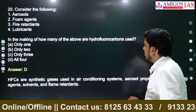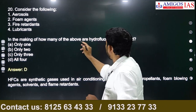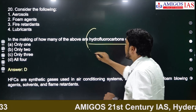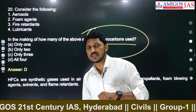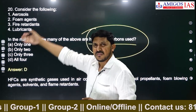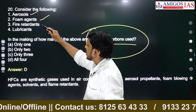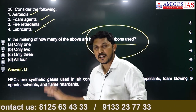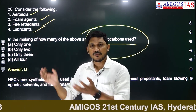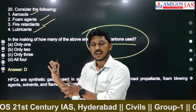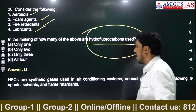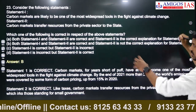Hydrofluorocarbons question — HFCs contain hydrogen, fluorine, and chlorine, and are used in making aerosols, foam agents, fire retardants, and lubricants. In this kind of question common sense is required — modern chemicals have applications across many industries. The answer should be all four options — hydrofluorocarbons are used to make all of these things.